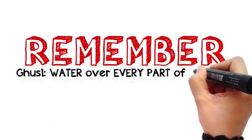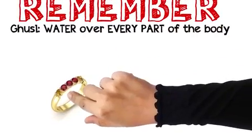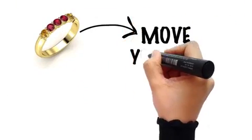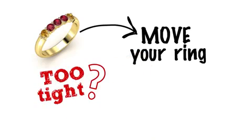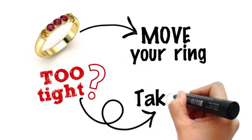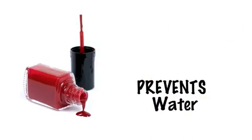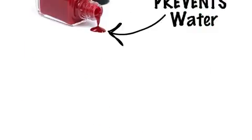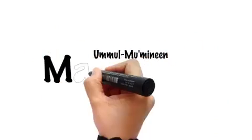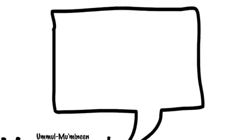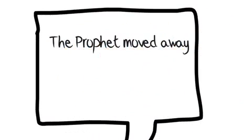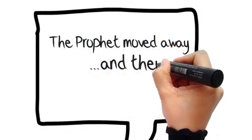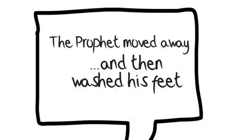Ghusl essentially means letting water run over every part of your body. So if you are wearing a ring, you should move it, and if it is so tight that water won't reach the skin underneath, then you have to remove it. Cosmetic items which form a barrier and prevent the water from reaching your skin must also be taken off. In a narration of Maimuna radiallahu ta'ala anha, it is mentioned that the Prophet ﷺ moved away from the spot where he had been taking Ghusl and then washed his feet.